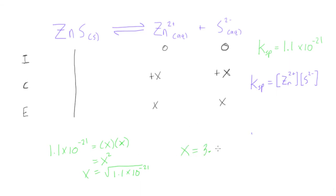you get about 3.32 times 10 to the negative 11. And this here, this x value that we're getting is our molar solubility of zinc sulfide in moles per liter.